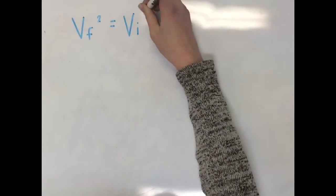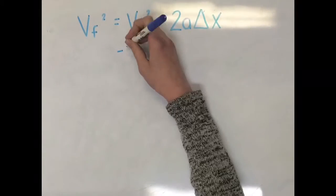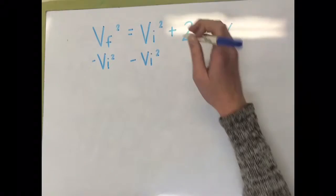Now we are going to use the big five equation to find the acceleration of the train in those four seconds. We're going to use the equation Vf squared equals Vi squared plus 2a delta x.